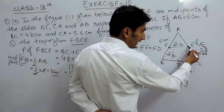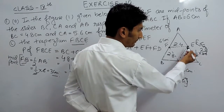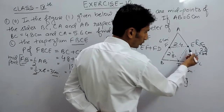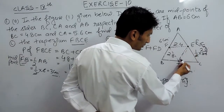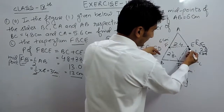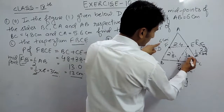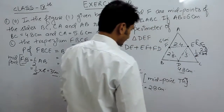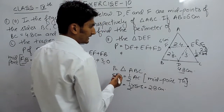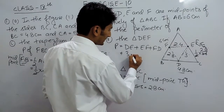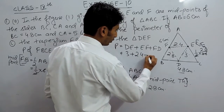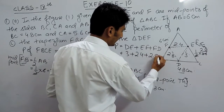Similarly, E and D are the midpoints of AC and BC. Joining them gives DE equal to half of AB. Half of 6 cm is 3 cm, so DE = 3 cm. Now we have all three sides of triangle DEF: DE = 3 cm, EF = 2.4 cm, and FD = 2.8 cm.